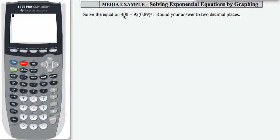Here we're asked to solve the equation 400 = 95(0.89)^x. The method we're going to use is the graphing method. We're going to round our final answer to two decimals.